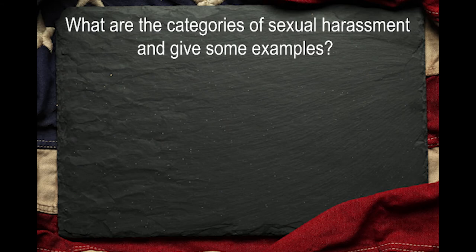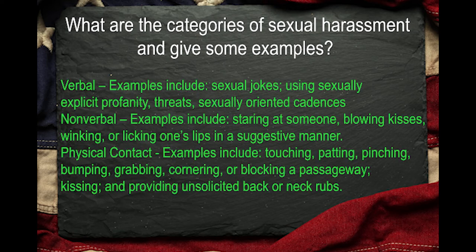What are the categories of sexual harassment and give some examples? Verbal — examples include sexual jokes, using sexually explicit profanity, threats, sexually oriented cadences. Nonverbal — examples include staring at someone, blowing kisses, winking, or licking one's lips in a suggestive manner. Physical contact — examples include touching, patting, pinching, bumping, grabbing, cornering or blocking a passageway, kissing, and providing unsolicited back or neck rubs.